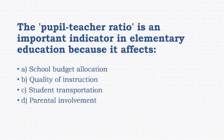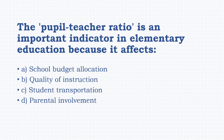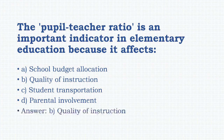The pupil-teacher ratio is an important indicator in elementary education because it affects: school budget allocation, quality of instruction, student transportation, or parental involvement. The answer is option B: quality of instruction.